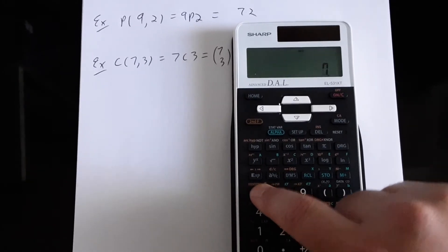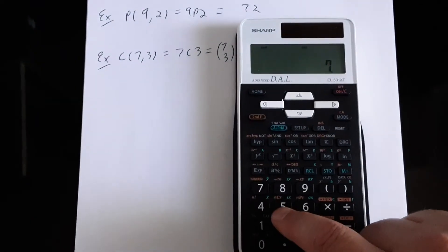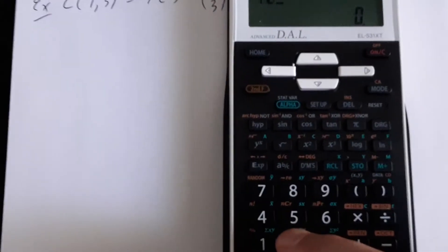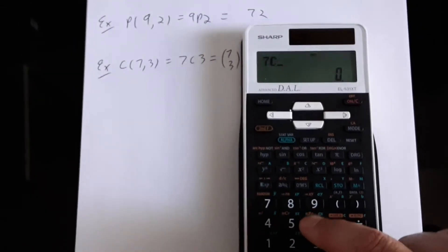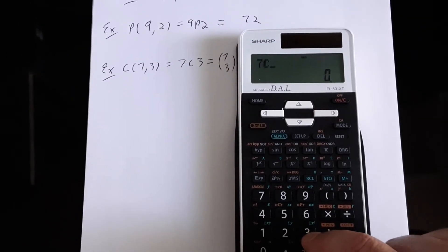And we find that by seven second function five. I'm using the number five because you can see that's the combination function right above the number five. Seven second function five three.